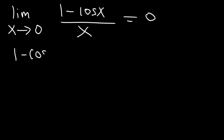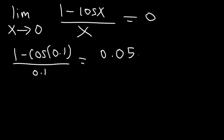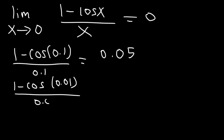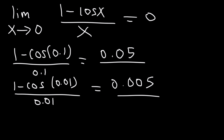To confirm it, let's plug in 0.1. This is going to give you approximately 0.05. Now let's try an even smaller number, 0.01. This will give you 0.005. Notice that these two numbers are not the same — this number is 10 times smaller — it's getting closer and closer to 0.